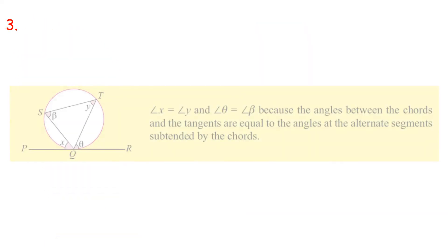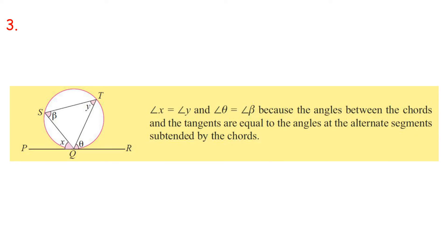Alternate segment theorem: Angle X equals Angle Y and Angle TTA equals Angle B, because the angles between the chords and the tangents are equal to the angles at the alternate segments subtended by the chords.